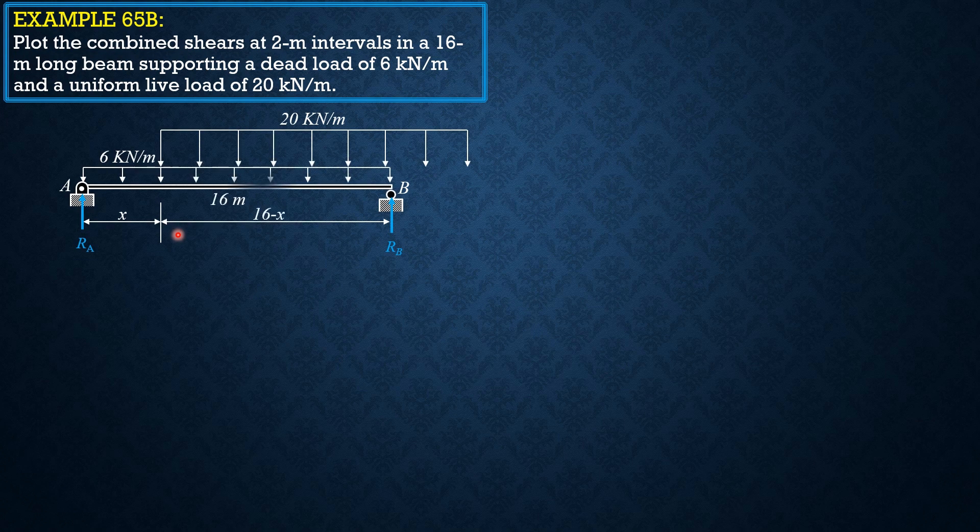So let us generalize the situation. Because the live load is moving, this would be the position of the left end of the live load at distance x from the left support. So we'll solve for Ra and derive the shear at distance x from the left support.